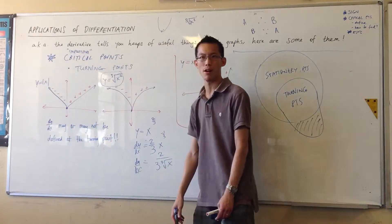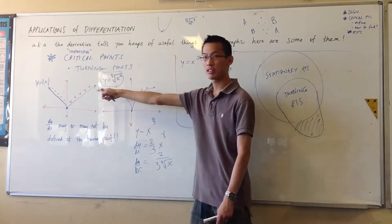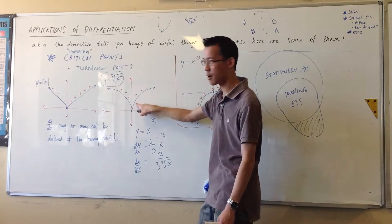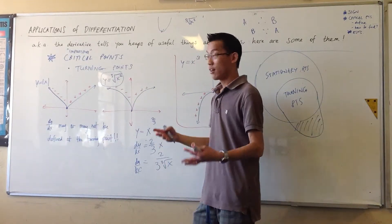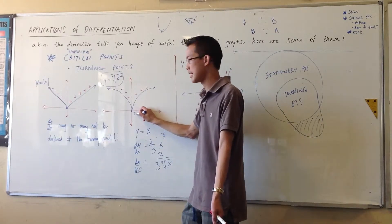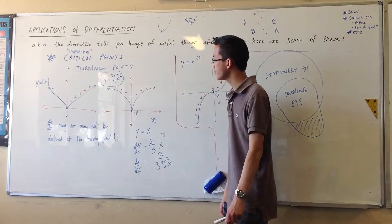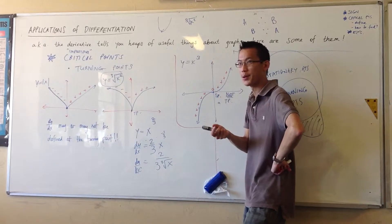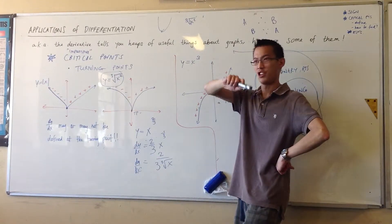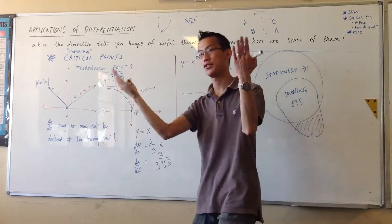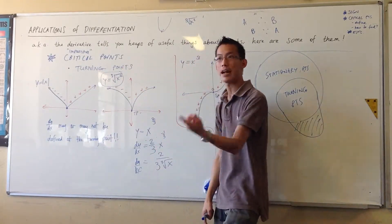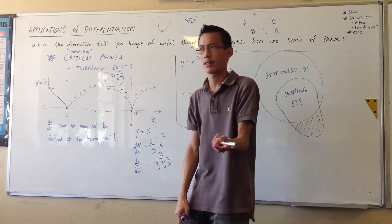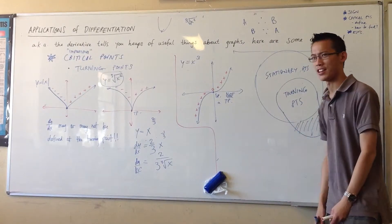The derivative is not defined at the origin — it doesn't have one. And for the same reason as we looked at before: as you take the limit of the derivative from the bottom and from the top, you get completely different values. Therefore, this is not a stationary point, but it is a turning point. So let's just review: a turning point is where the function turns, or the sign of the derivative changes on either side. Number one, you can find stationary points that aren't turning points. And number two, you can find turning points that aren't stationary points. I should have drawn a Venn diagram the first time.